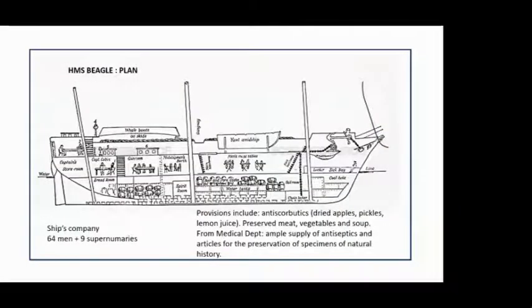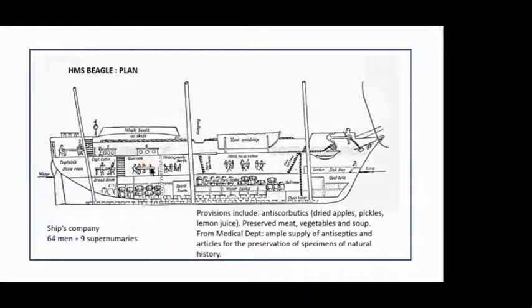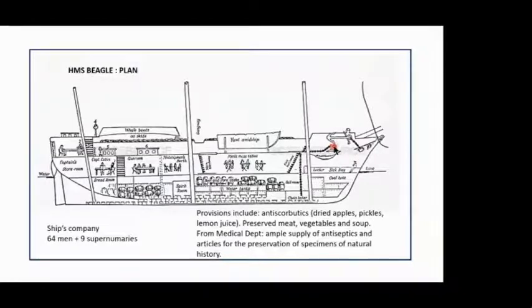This is a planned view of the ship fitted for survey work, with a ship's company of 64 men and 9 supernumeraries. Provisions included lots of anti-scorbutic items — bright apples, pickles, and lemon juice — as well as preserved meat and vegetable soup. From the medical department they got ample supplies of antiseptics and articles for the preservation of specimens of natural history. The captain's cabin was down aft, officers and midshipmen were here, and the ship's company lived in their hammocks up front. Storage areas were below decks along with water tanks, the new windlass for the anchor cable, the crew locker, and the bread room.